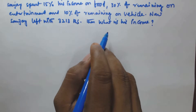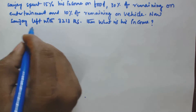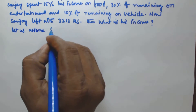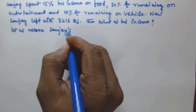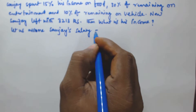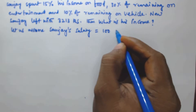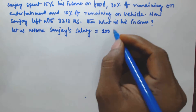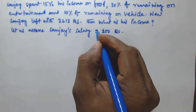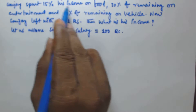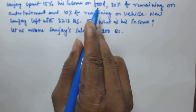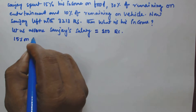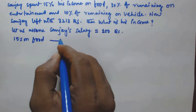So let us assume Sanjay's salary is equal to ₹100. Now what did Sanjay spend? He spent 15% of his income on food. So once he spent the 15% on food, he will be left with...